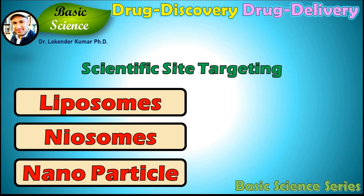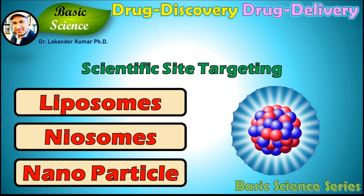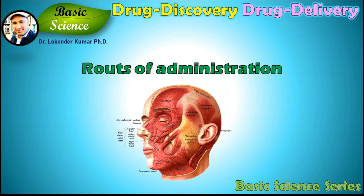The most important aspect of drug delivery is scientific site targeting. Researchers are developing various drug delivery systems like liposomes, neosomes, and nanoparticles that can efficiently deliver the drug inside the body and specifically target tissues and cells to deliver the molecule at the particular site of disease. Another important aspect is route of administration. Different routes are available for different types of drugs, and it is important to understand what those routes are and what their efficacy levels are.